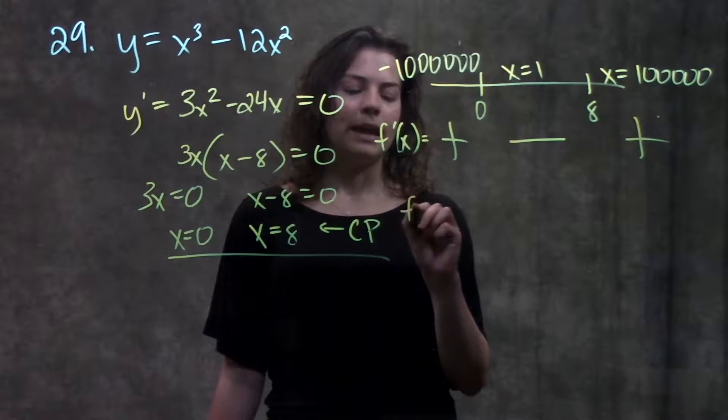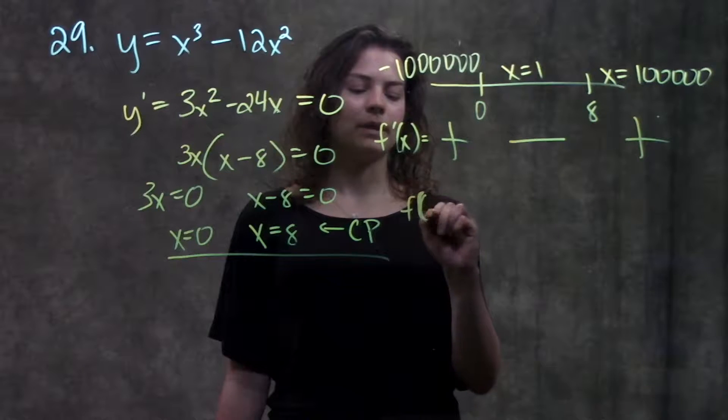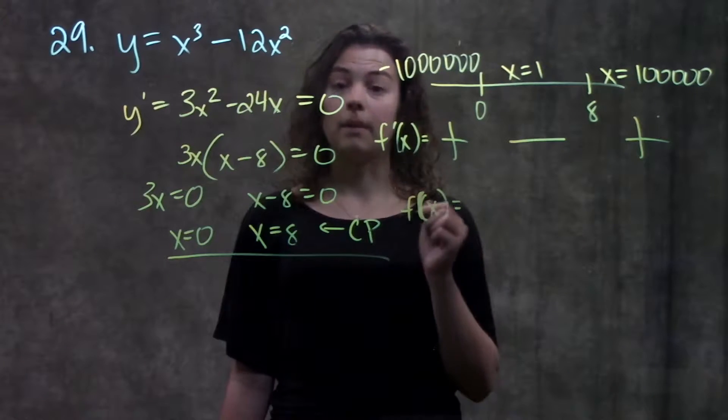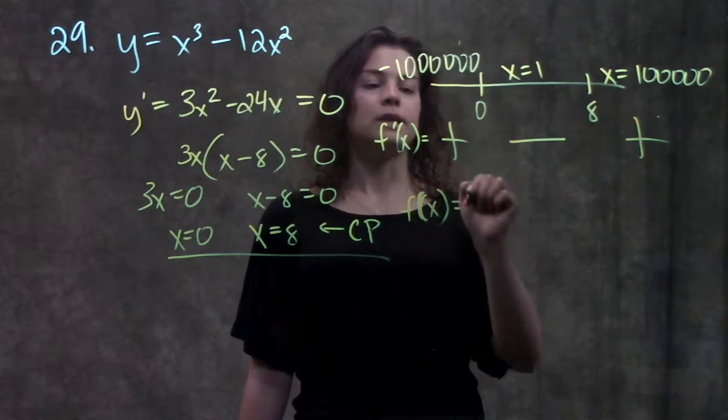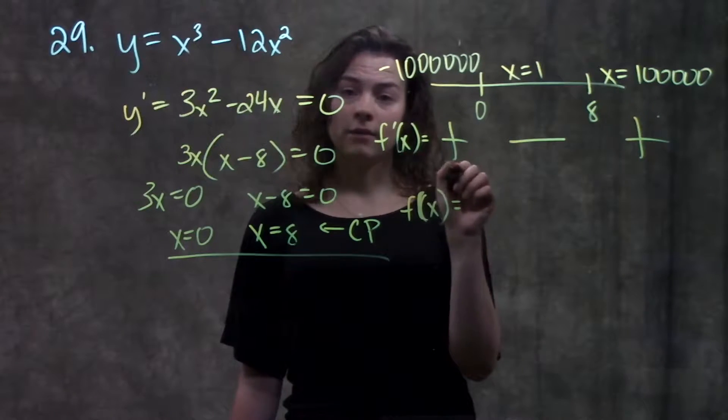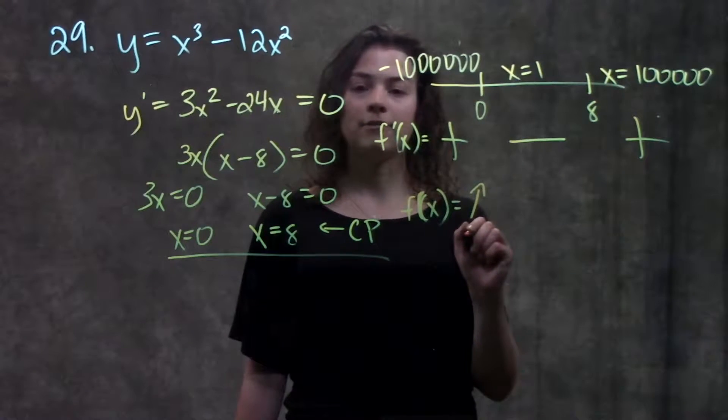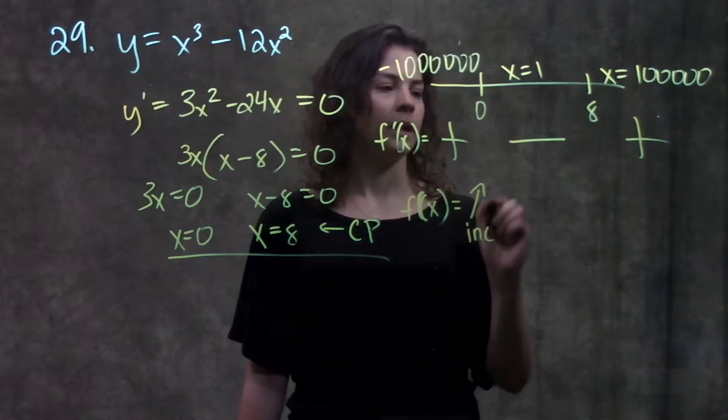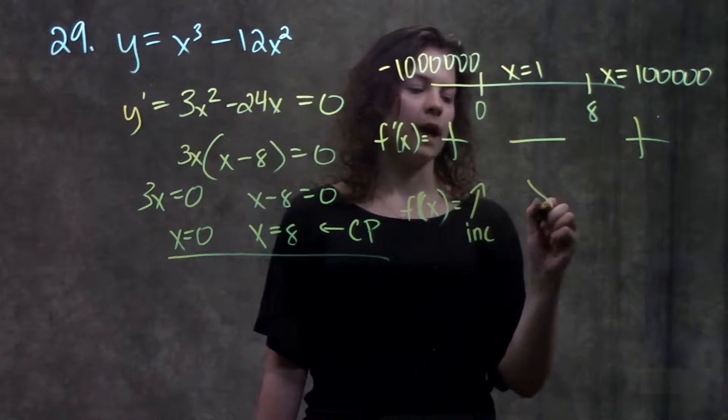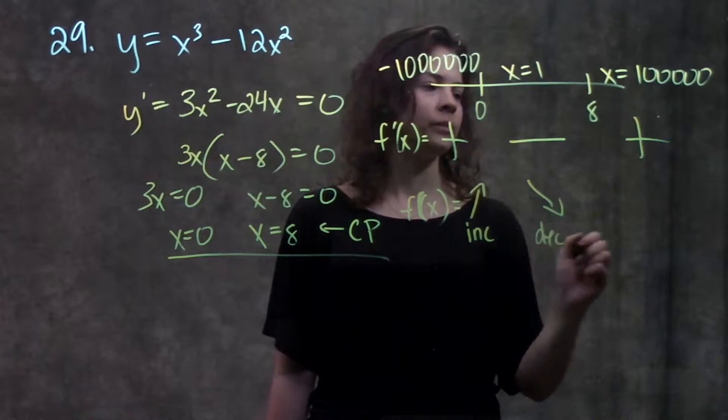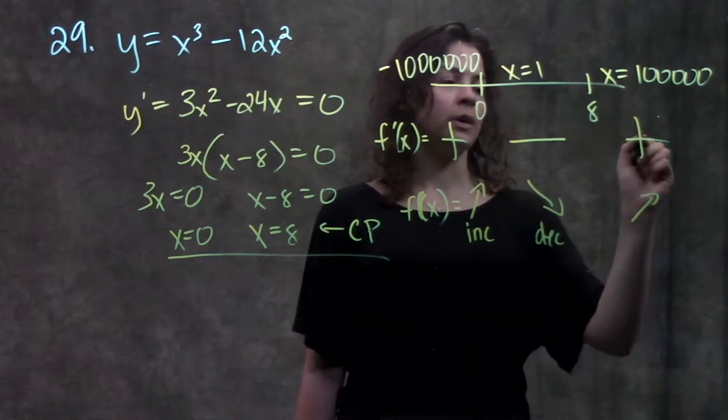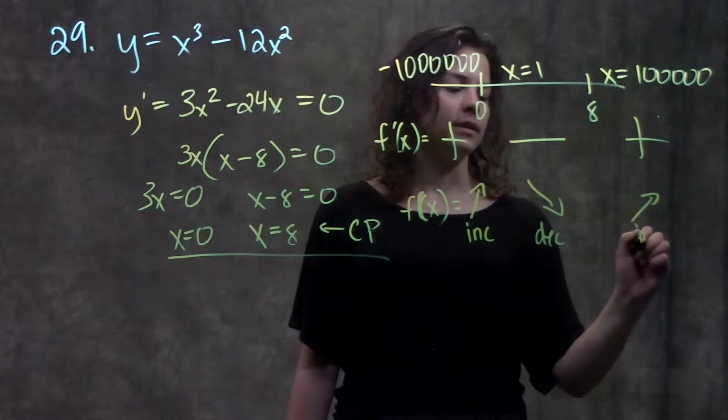I know the sign of my derivative. Now I'm going to see what f of x is doing, my original function. On this interval here, since the derivative is positive, that means f of x is increasing. Here, the sign is negative, so f of x is decreasing. And on this interval, since the derivative is positive, f of x is increasing.